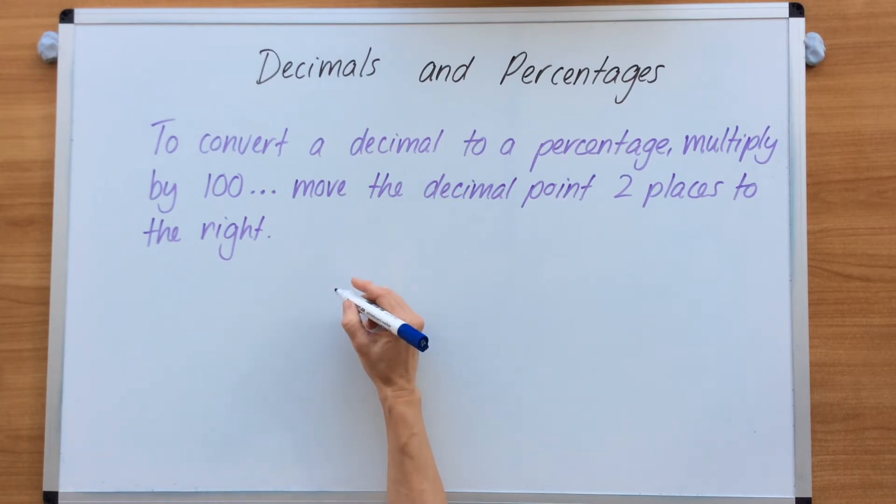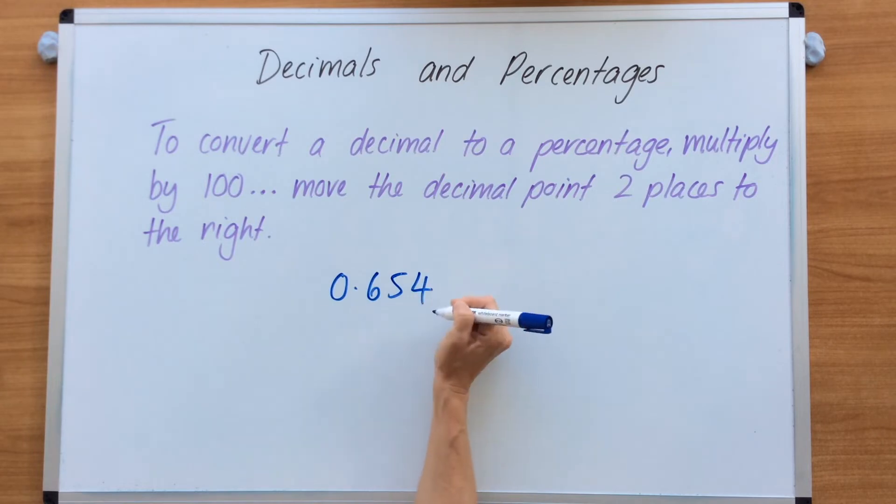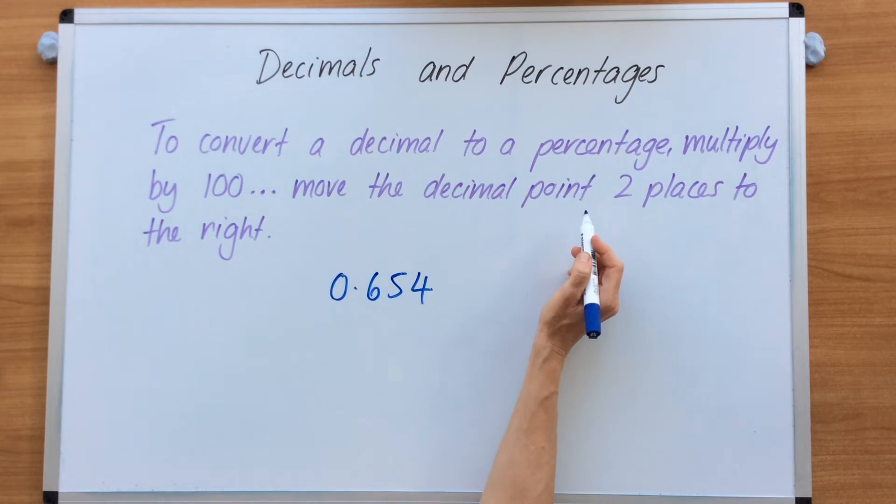Let's look at this number here. We've got 0.654. In order to go from decimal to percentage, we multiply by 100.